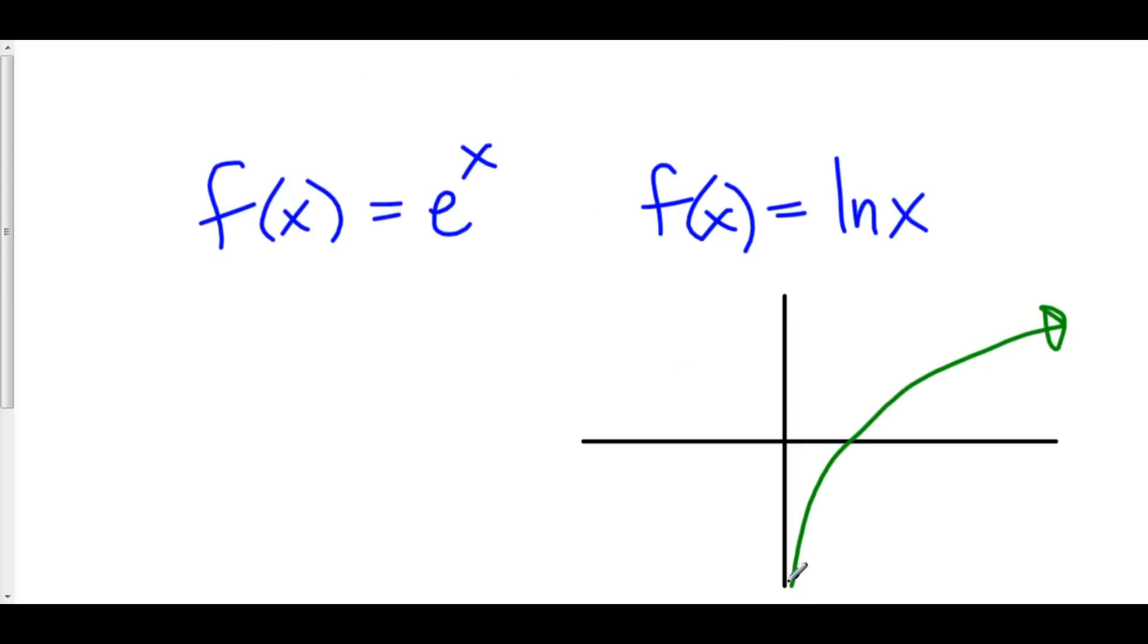Because as you approach zero from the right hand side, natural log of x approaches negative infinity. And everywhere to the left of zero, natural log of x doesn't exist. There is no function value, and if there is no function value, then we have discontinuity. So natural log of x has discontinuity at x equals zero and onto negative infinity. There's a whole space of discontinuity there.